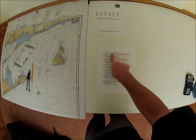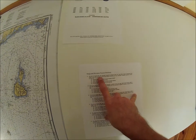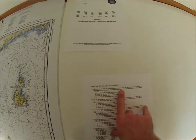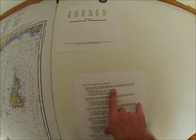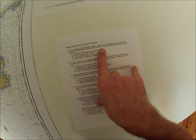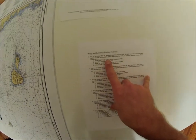Range and Deviation, Practice Problem 1. You are on course 55 per standard magnetic compass when you sight Block Island Southeast Point Light in line with Block Island Arrow Beacon, bearing 319 degrees per standard magnetic compass. Based on this, I'm going to read these answers.